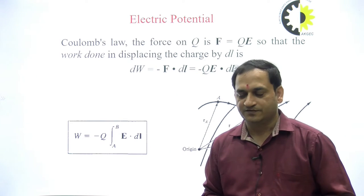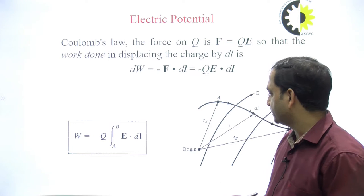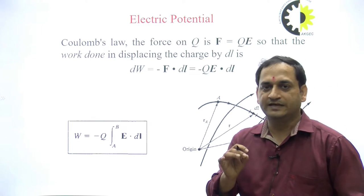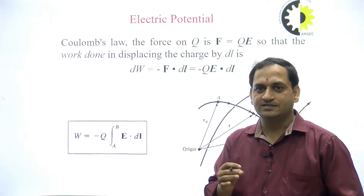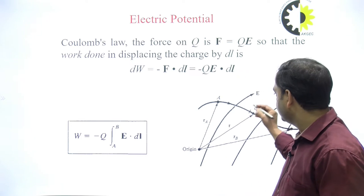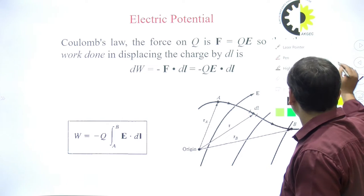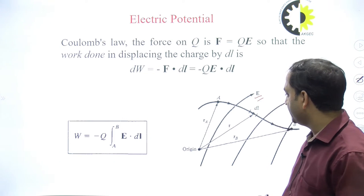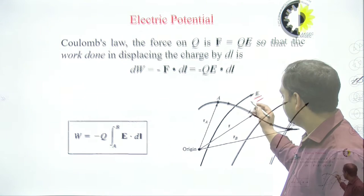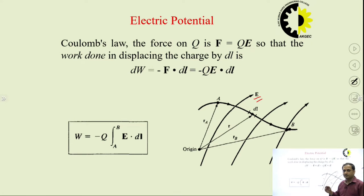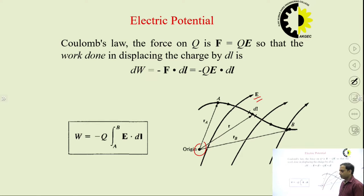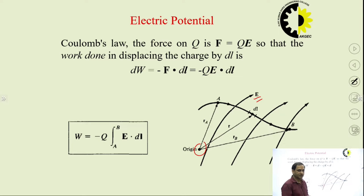In electric potential, the main thing we have to take care of is that electric potential is calculated when we have an already existing electric field. We have a vector field — this electric field — generated by an existing source. That source may be present somewhere, maybe at the origin of a coordinate system or any other place. This electric field is generated by one source, and what we are doing is moving from one point to another point in the electric field.